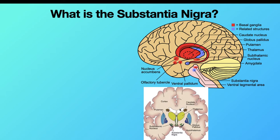Over here we have a front view, and we cut it from our front view — this is called a coronal view. You can see the putamen over here, the globus pallidus right behind, the caudate nucleus is over here, and the thalamus is this yellow thing over here. It's not part of the basal ganglia, but it's a related structure.